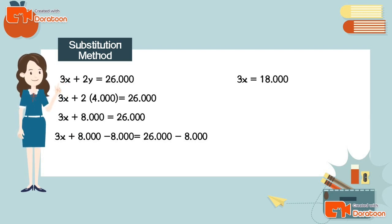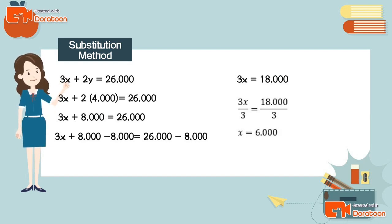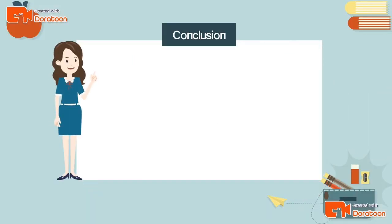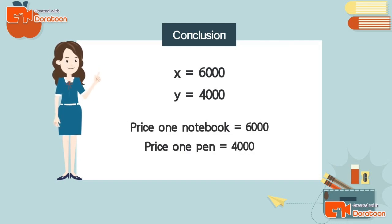Dividing both sides by 3: x = 18,000 ÷ 3 = 6,000. So x = 6,000 and y = 4,000. Remember, x is the price of one notebook and y is the price of one pen, so one notebook costs 6,000 rupiah and one pen costs 4,000 rupiah.